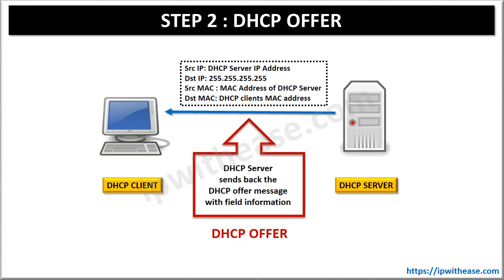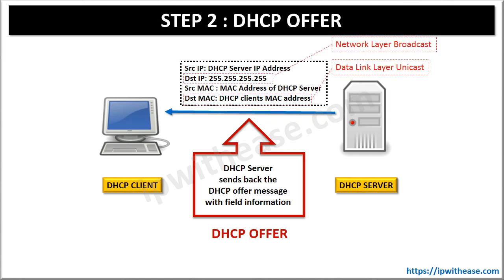Step 2: DHCP Offer. The DHCP server receives the DHCP Discover message from the client and sends back a DHCP Offer message. In the packet, the source IP is the DHCP server IP address and the destination IP is all 255s — a broadcast since the client still has no IP address. In the frame, the source MAC is the MAC address of the DHCP server while the destination MAC is the DHCP client's MAC address. The DHCP Offer message is a layer 2 unicast but still a layer 3 broadcast.